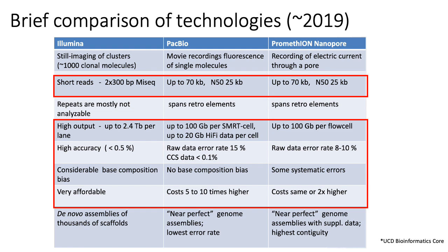With PacBio sequencing, you can achieve higher accuracy because for any given fragment you can actually sequence it multiple times, which decreases your error rate. But if you were to only sequence each fragment once, then Illumina sequencing generally yields higher accuracy.